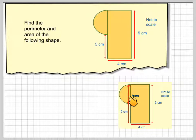So you should annotate the diagram. So here this is the diameter of that semicircle, which means its radius is going to be 2 cm.